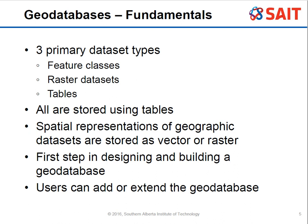Some fundamentals of geodatabases: there are three primary datasets — feature classes, raster datasets, and tables. Everything has a table associated with it. All attributes are found in a table for vector data, and raster datasets also have information that shows up as a table. The spatial representations of geographic datasets are stored as vector or rasters, and you can use either in a geodatabase.